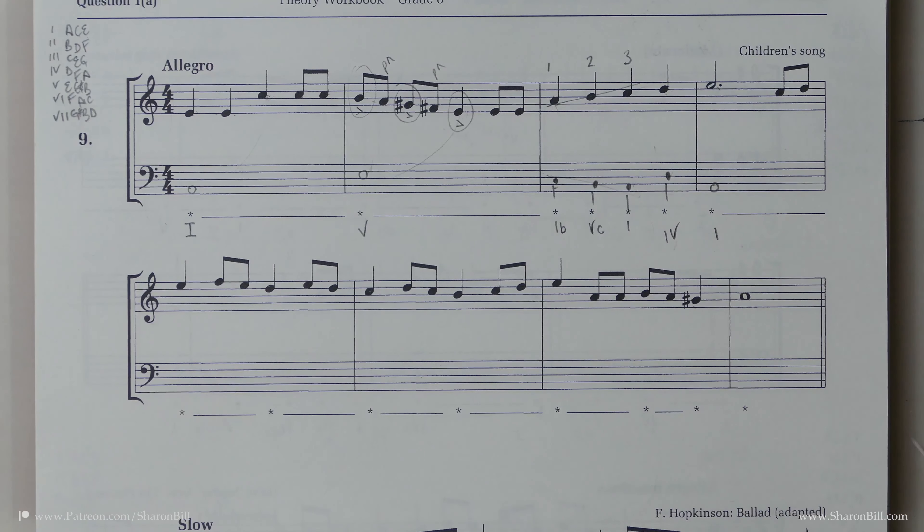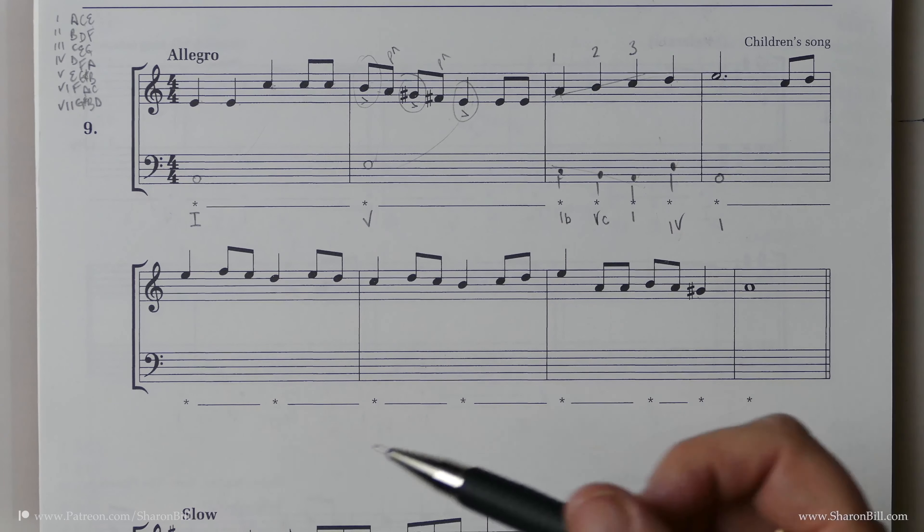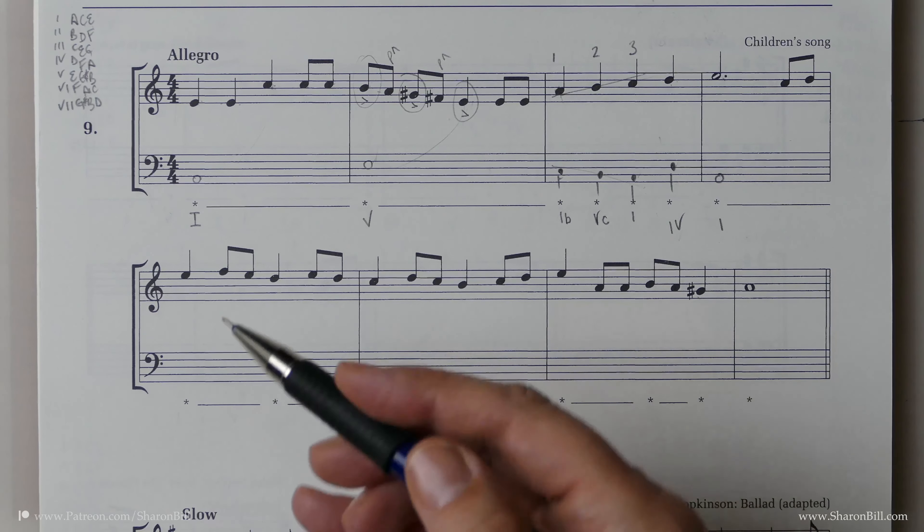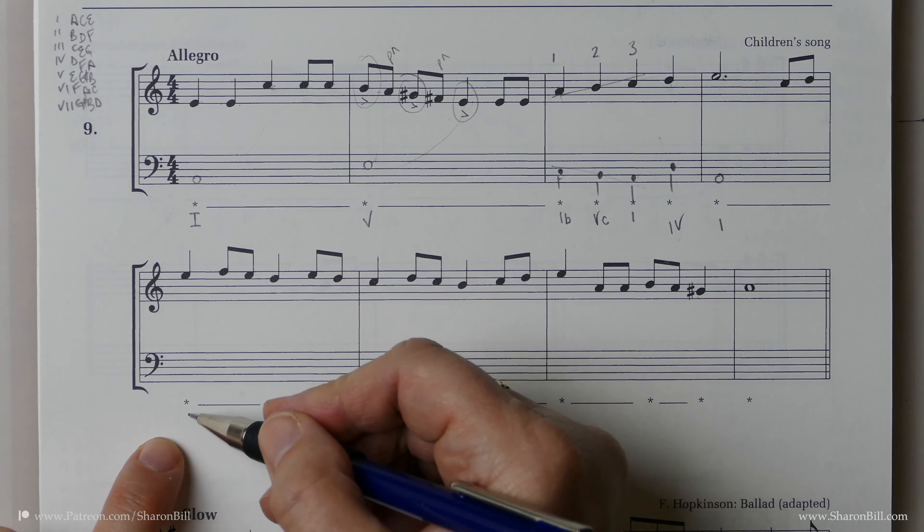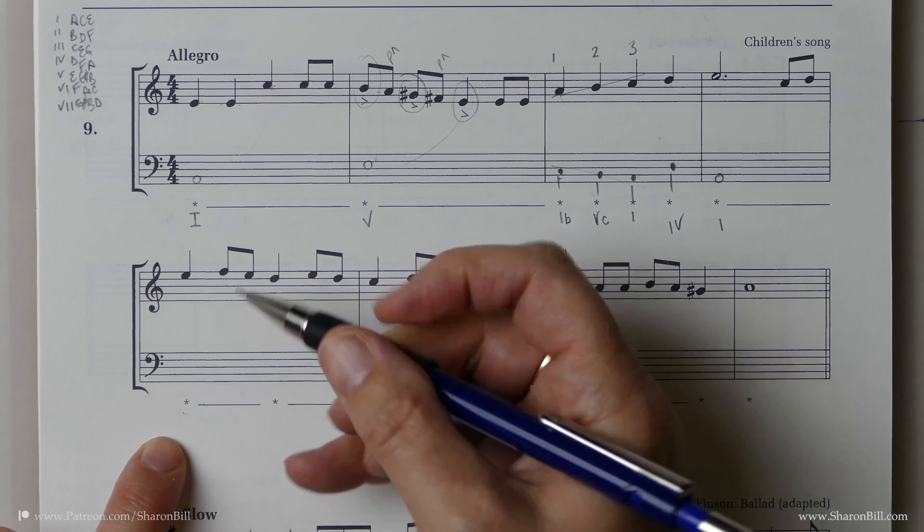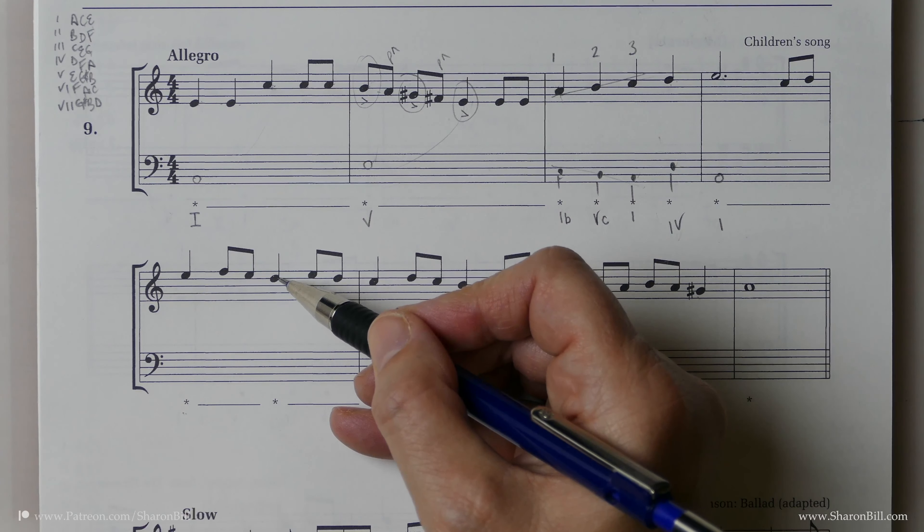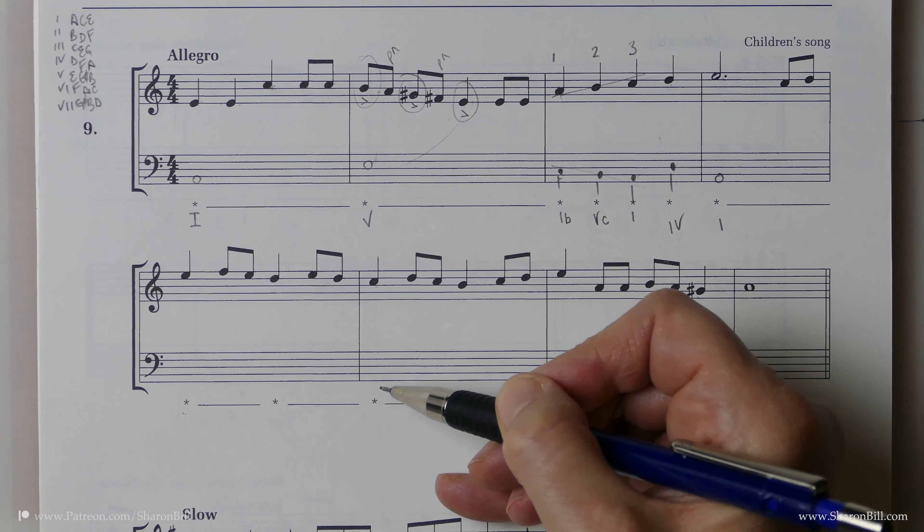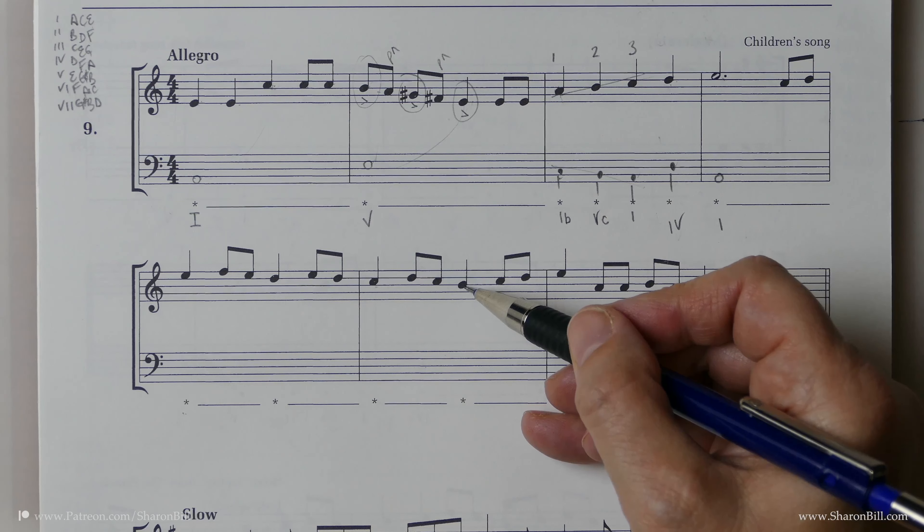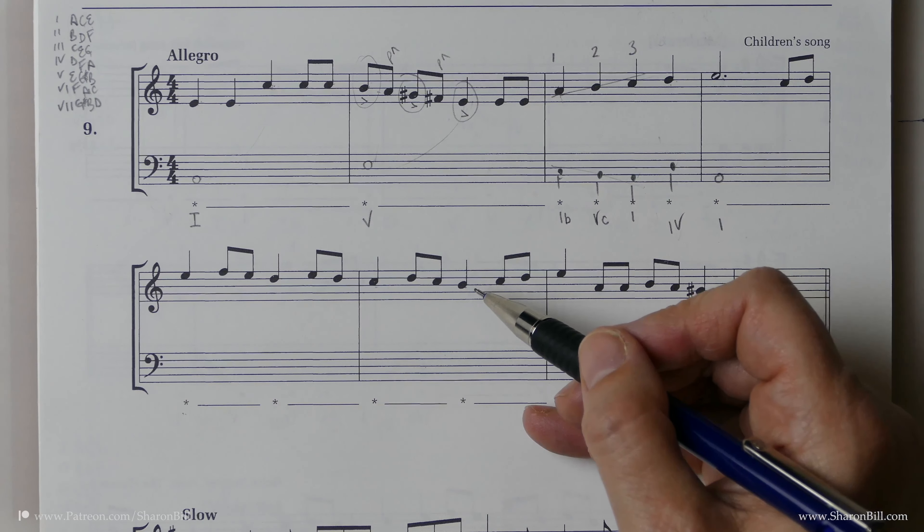Now let's move on to the next bit. So we have a lead in to the next section here. Now we could choose all sorts of different chords. You could think, well, chord 1 again. Or you could think 1B. And then here you could think, well, that's a D. So we could go to chord 4 again. And then that's a C. So we could go back to chord 1. And then here that's a B. That could be chord 5. And so long as they don't create consecutives, that would be fine.